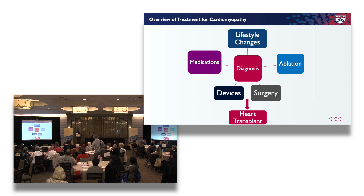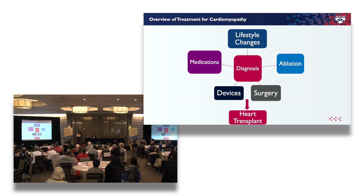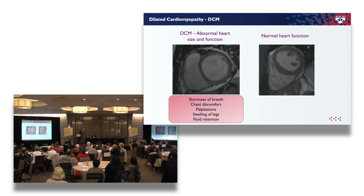The overview of treatment is that first we rely on making a good diagnosis — we want to be sure you actually have one of these conditions and we do some testing to clarify that. Then we talk about medications, some lifestyle changes, and maybe ablation for rhythm problems. We also discuss devices that might benefit you, like a pacemaker, a defibrillator, or even a ventricular assist device. There are surgeries that can benefit folks with a thick heart like hypertrophic cardiomyopathy, and if all of that isn't enough and you're still very symptomatic, only then do we pursue heart transplant — that's our last option.